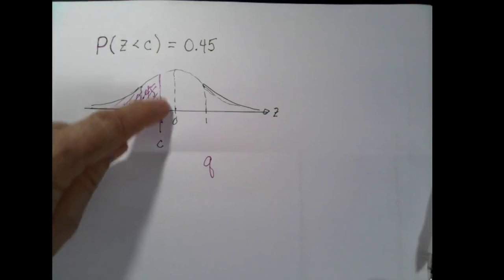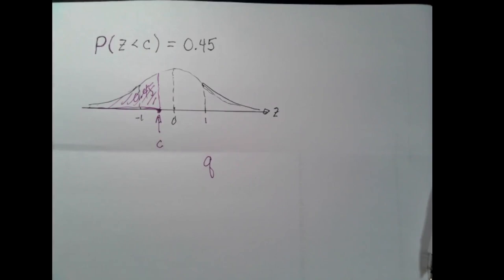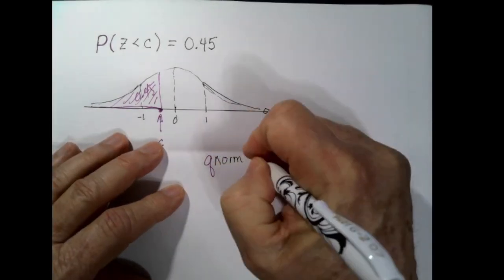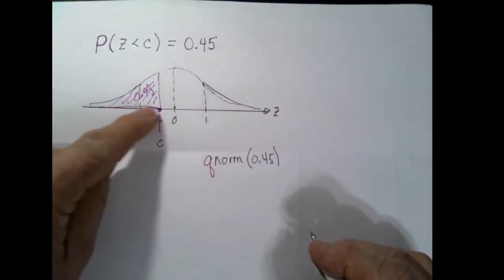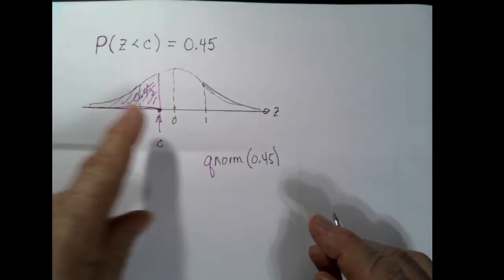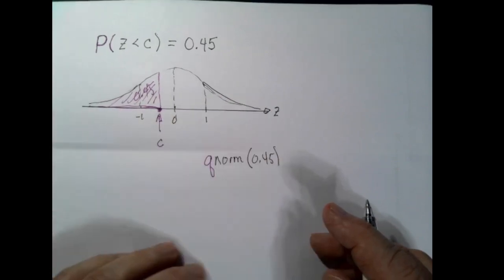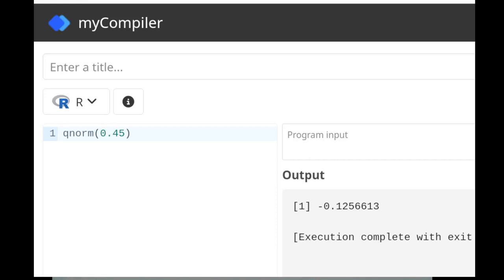That means we're looking for the 45th percentile. The 'q' in qnorm stands for quantile. We're looking for qnorm(0.45) — the number c so that 45% of the population is below it and 55% is above. The R script qnorm(0.45) gives us the 45th percentile, which is negative 0.125.